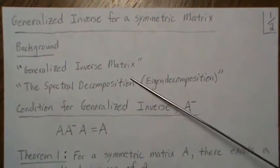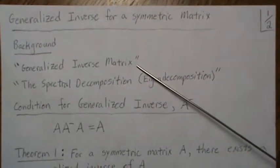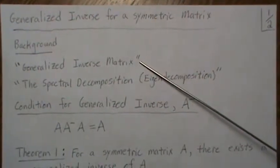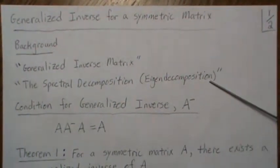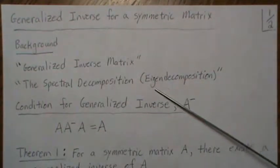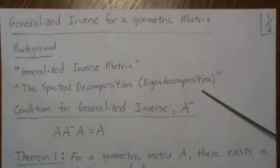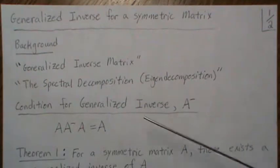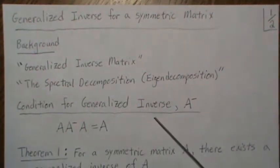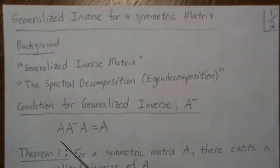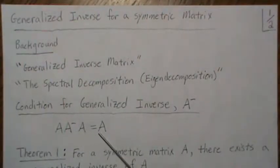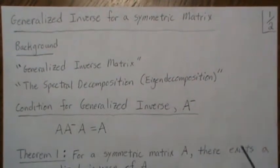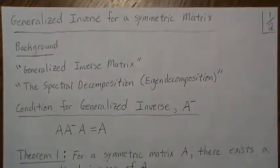The background videos I'd recommend you watch before this are the one called 'Generalized Inverse Matrix' and the second one is the spectral decomposition or eigen decomposition. As a reminder, the condition for a generalized inverse matrix is that A times A-dash times A must equal A — and then A-dash is called a generalized inverse of A.